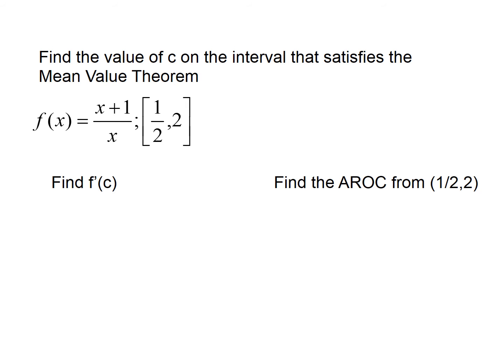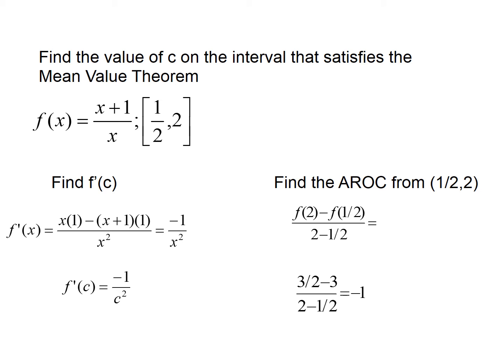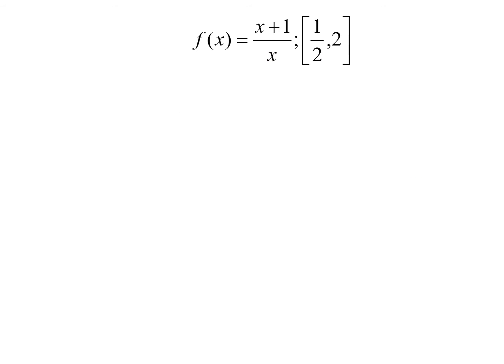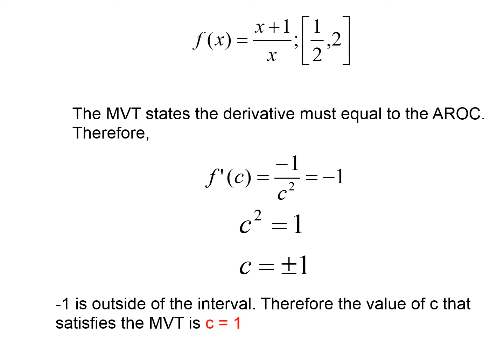Let's do an example. The first thing we need to find is the derivative of this function using the quotient rule. The derivative is negative 1 over x squared. Then we find the average rate of change from 1/2 to 2 using f(b) minus f(a) over b minus a. We set the derivative equal to the average rate of change: negative 1 over c squared equals negative 1. We get c equals plus or minus 1. Since negative 1 is outside the interval, the Mean Value Theorem gives us c equals 1.